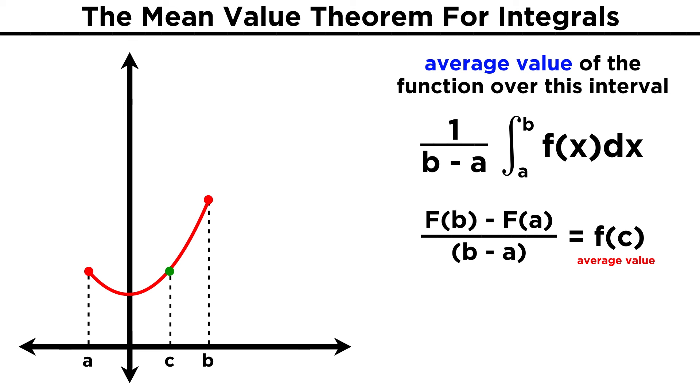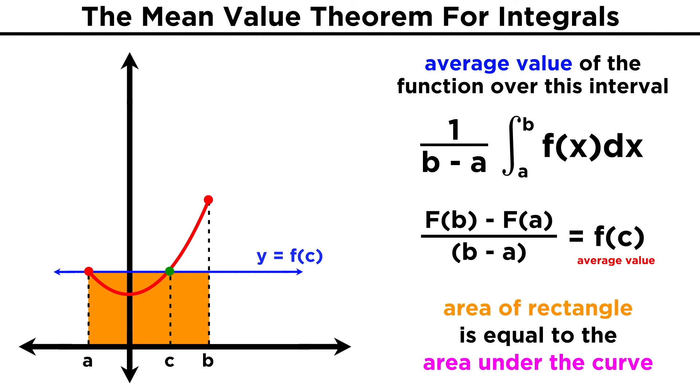Since we were able to interpret the mean value theorem for differentiation in a geometric way, comparing the slope of a tangent line to the slope of a secant line, let's also acknowledge here that this integral, if for a positive function, represents the area under the curve that is below a particular line, y equals f of c, such that the rectangle being formed has an area that is the same as the area under the entire curve.